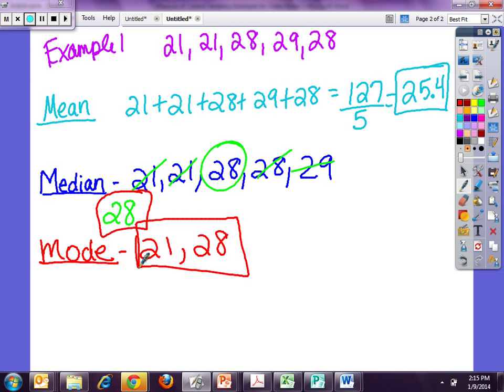And then we have range. Range, we take the highest number, which is 28. And I know that because I, or I'm sorry, which is 29 because I put those in order. And I subtract 21. And I get eight. So what we're going to talk about is determining which time it's best to use which part, mean, median, mode, or range. So then, now let's go to your next example.